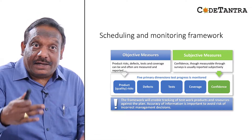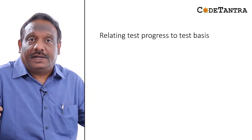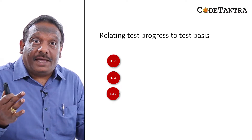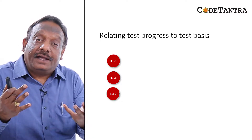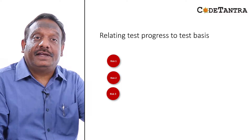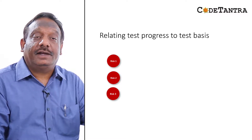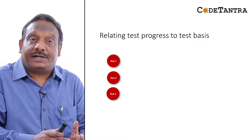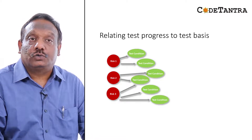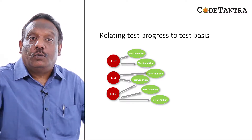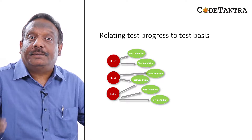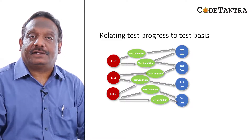Let's look at how we can relate testing progress to the test basis. For example, if our test strategy is focused on risk-based testing, we link test progress back to the test basis. Say we've identified three important risks: risk one, risk two, and risk three. We establish traceability through testing documentation — for these three risks we've created six test conditions, and from those six test conditions we've devised four test cases.